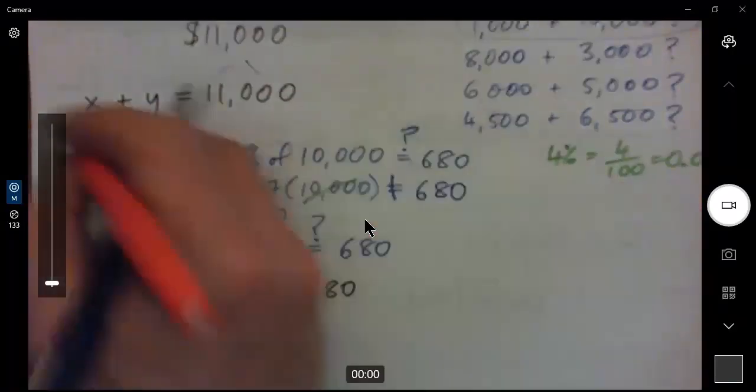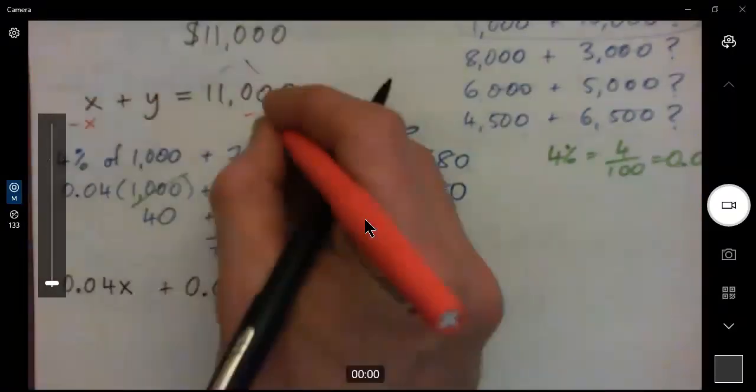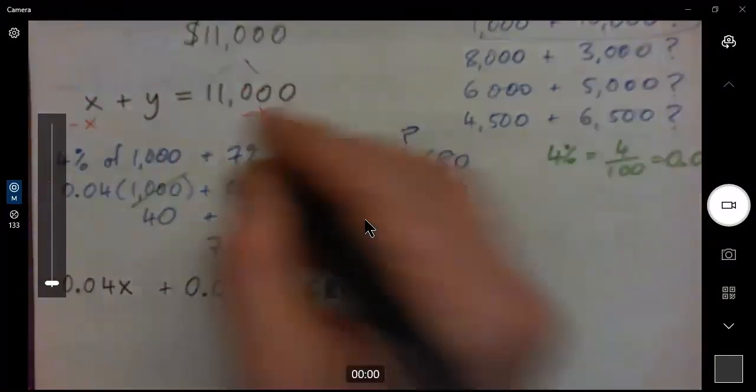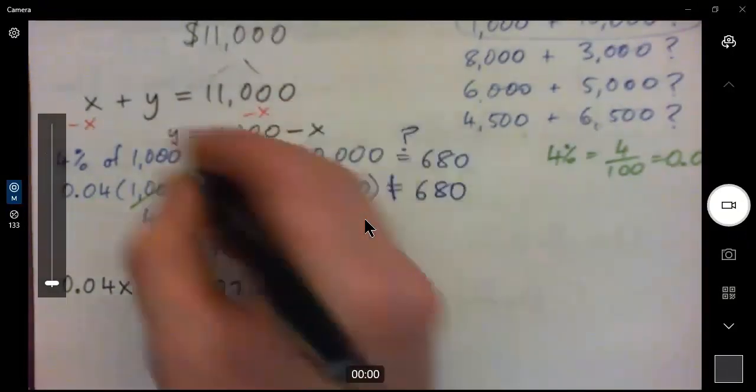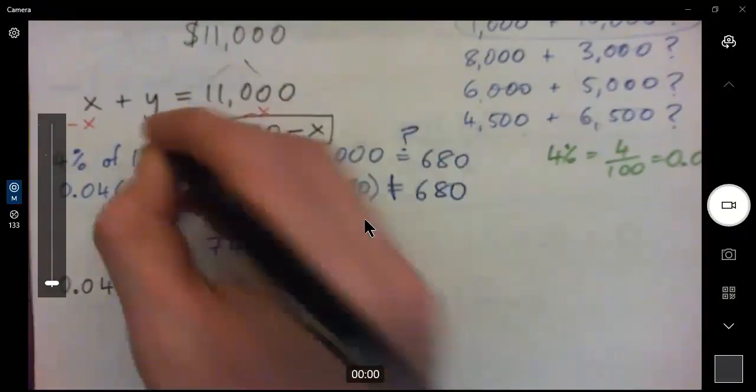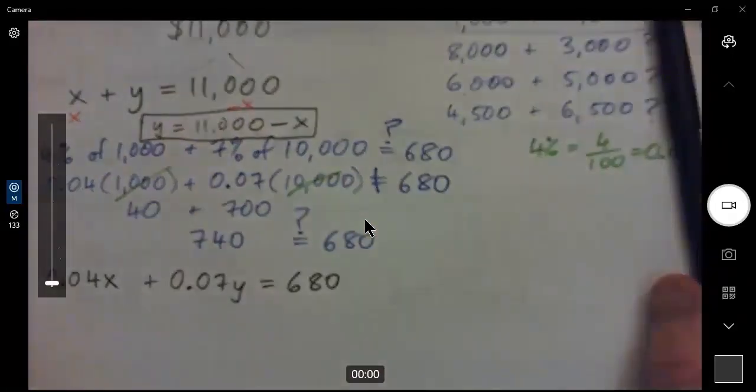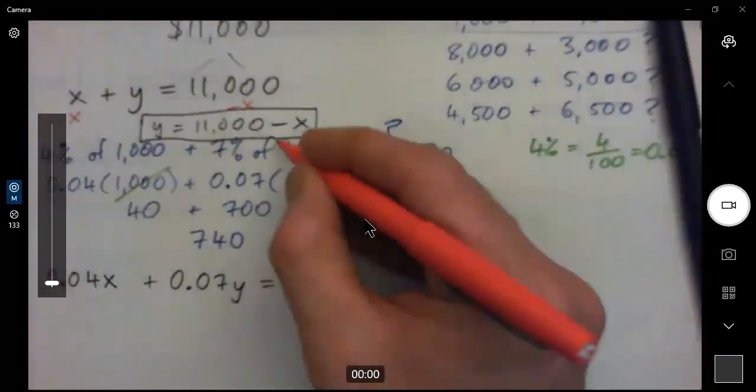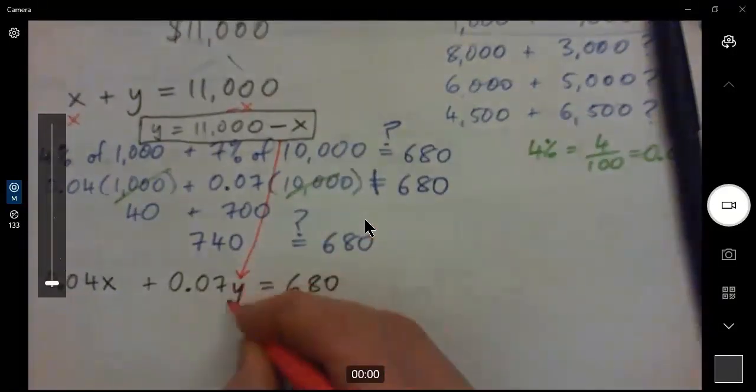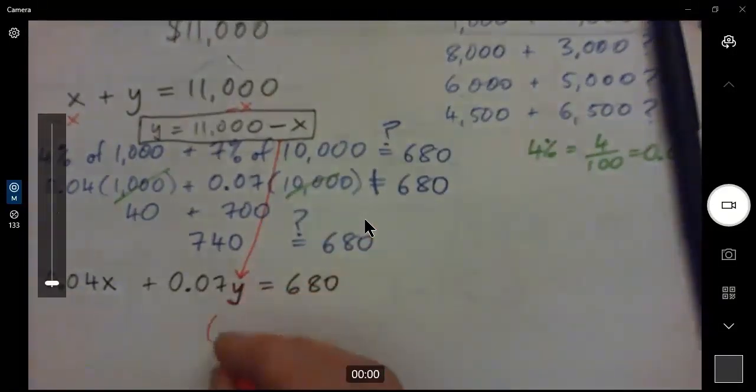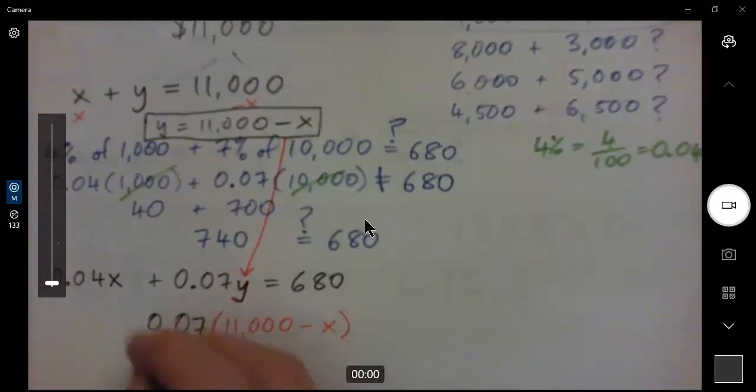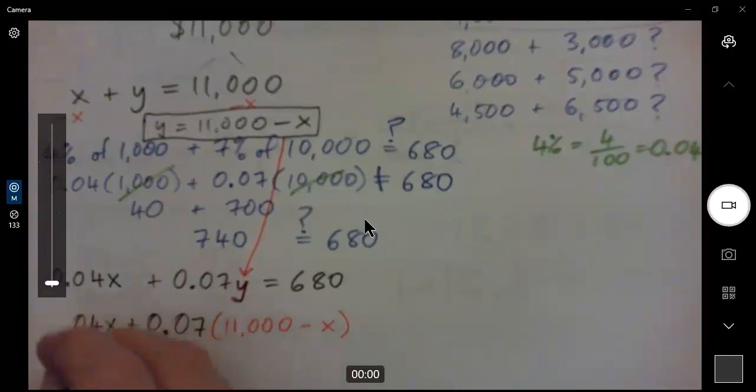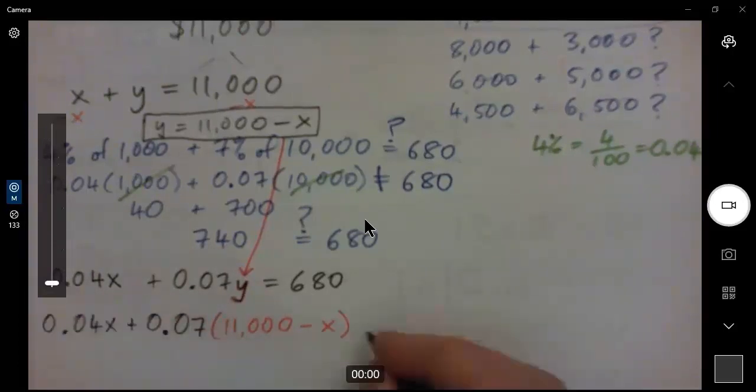I suggest substitution because all you have to do is, look, subtract X from both sides up here, and then you have Y is 11,000 minus X. Does that make sense? Yep. Right. And we can use that, and we can take this 11,000 minus X, and we can plug it in for Y down here, like substituted it. 11,000 minus X. Make sense? Yeah. And we will have this. And now we have an equation with only the X missing.